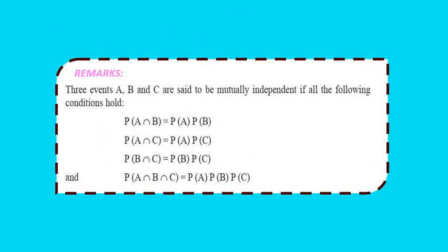Three events A, B, C are said to be mutually independent if all of the following conditions are satisfied: P(A∩B) = P(A)×P(B), P(A∩C) = P(A)×P(C), P(B∩C) = P(B)×P(C), and P(A∩B∩C) = P(A)×P(B)×P(C). Please pause and note down this point.